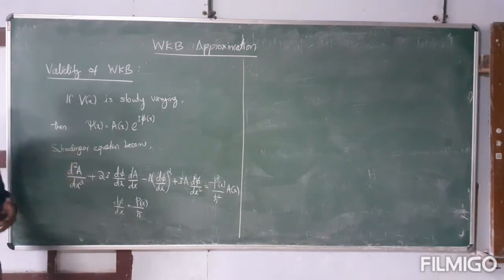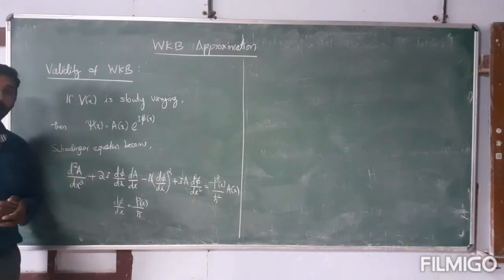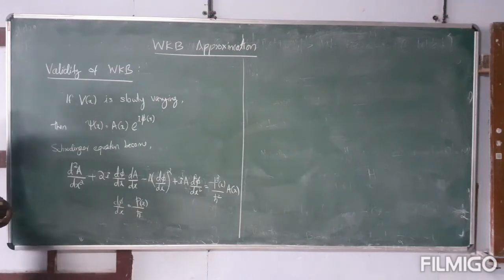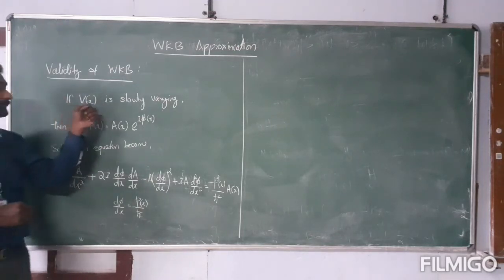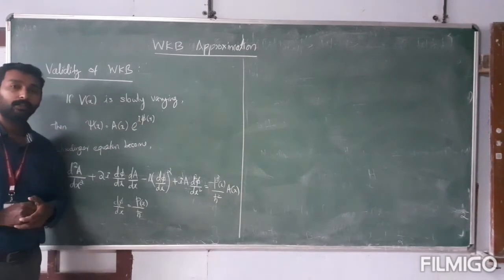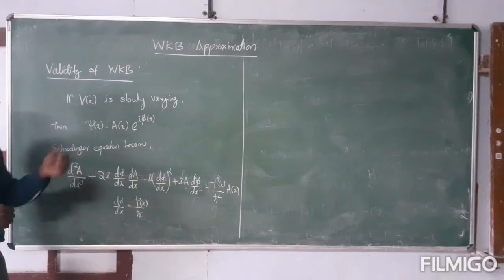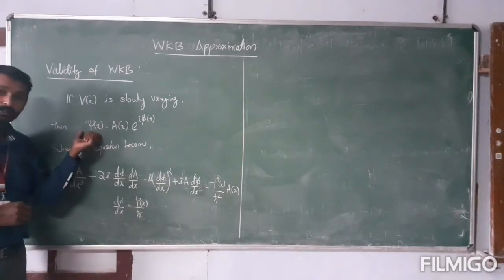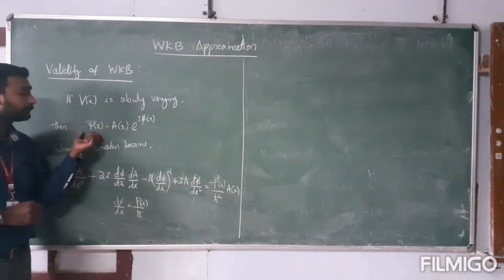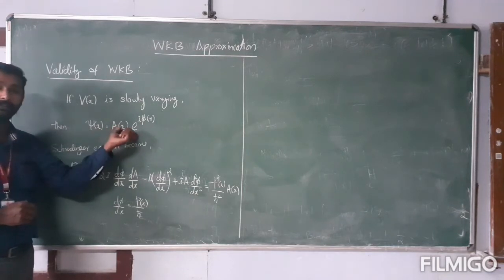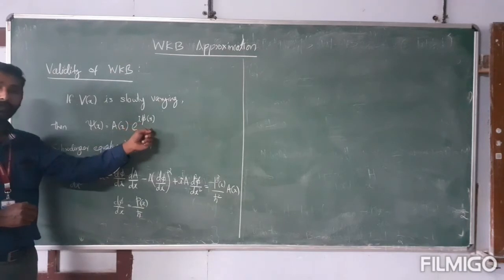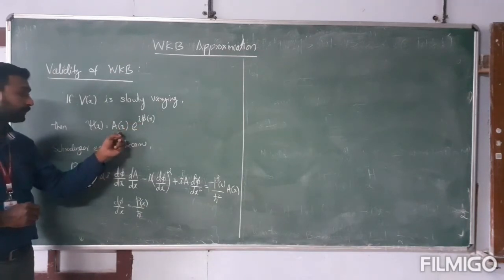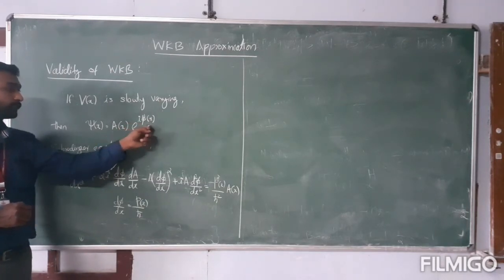We can recall what we have discussed in the earlier class. WKB is valid if V of x is slowly varying. So if the potential of the system is a slowly varying function, then I can write the wave function in the classically allowed region as a harmonic function — it can take the form A of x raised to i phi of x. So both amplitude and the phase are functions of x.